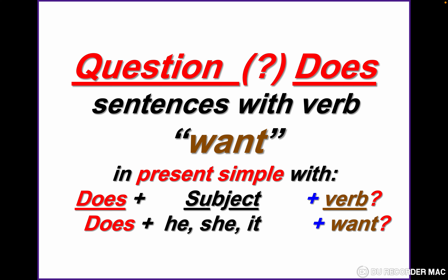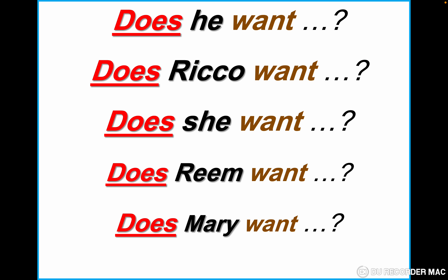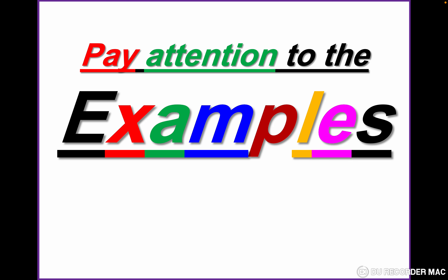Examples: does he want? Does Rico want? Does she want? Does Rim want? Does Mary want? We notice in the question form that the verb with he, Rico, she, Rim, and Mary doesn't take 's'. I repeat: in the negative and question form, the verb with he, she, and it doesn't take an 's' — it's in the infinitive.